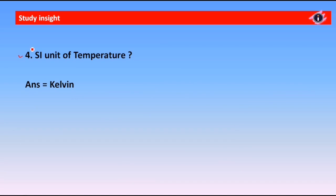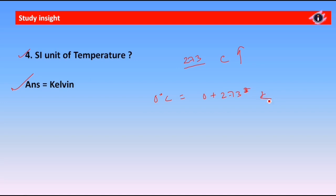What is the SI unit of temperature? We discussed Fahrenheit and Celsius, but the SI unit is Kelvin. Kelvin means 0 degrees Celsius equals 0 plus 273 = 273 Kelvin. For example, 20 degrees Celsius equals 20 plus 273 = 293 Kelvin.